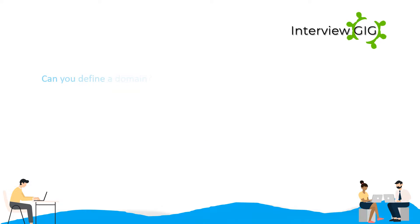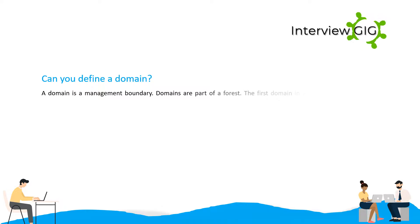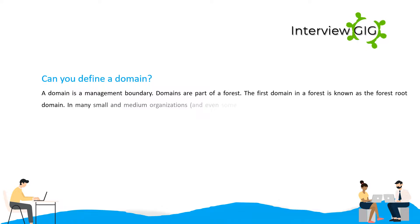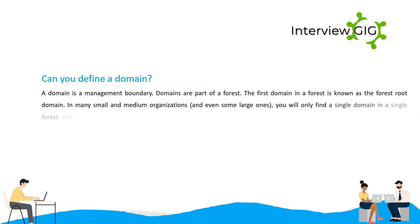Can you define a domain? A domain is a management boundary. Domains are part of a forest. The first domain in a forest is known as the forest root domain. In many small and medium organizations, and even some large ones, you will only find a single domain in a single forest. The forest root domain defines the default namespace for the forest.